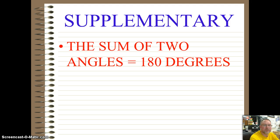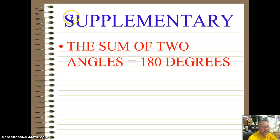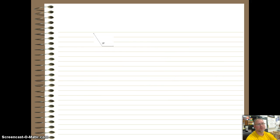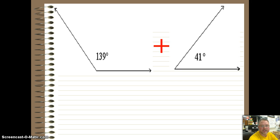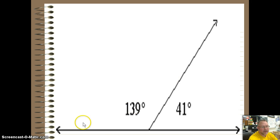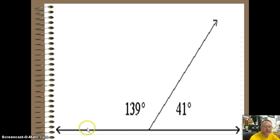Supplementary angles are a little bit different — now it's two angles with 180 degrees as a total. One way to remember this: take the S in supplementary and connect it to make an 8, another play on words. You have to have two angles to make this happen. So when we look at two angles put together, we can take 139 degrees plus 41 degrees — if we add them up, we get 180. That's also a straight line, a straight angle. So when we put these two together, we're making a straight line, and most of the work today with parallels and transversals will involve supplementary angles.